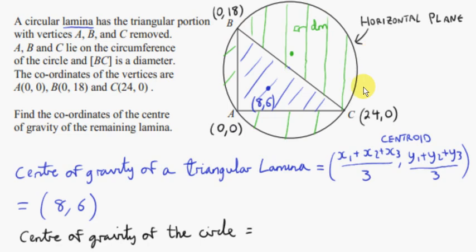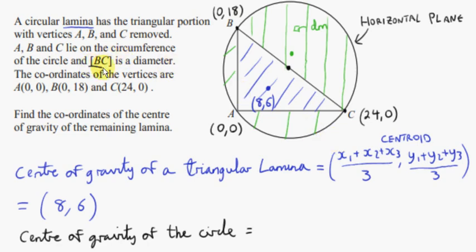Now let's consider the center of gravity of the entire circle. We cannot get the center of gravity of the green part directly because it's not a regular shape, but we can easily get the center of gravity of the circle — that's just the center of the circle. For a uniform lamina, the sum of the moments of the weight of each piece about the center is zero, so the center of the circle is the balance point. The center of the circle is just the midpoint of BC, since BC is the diameter.